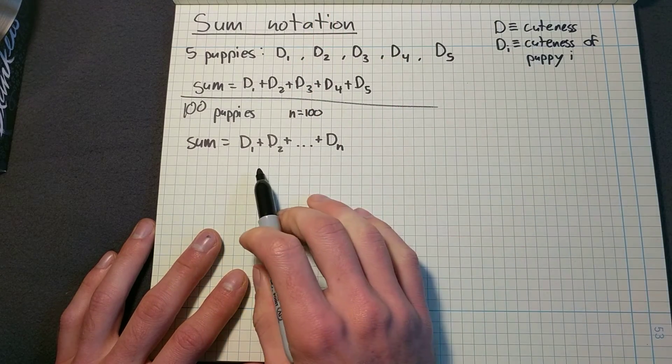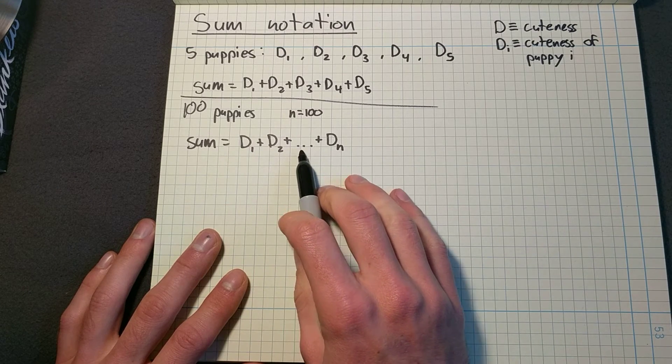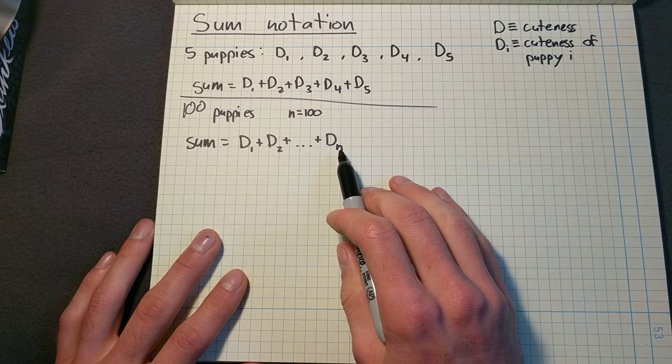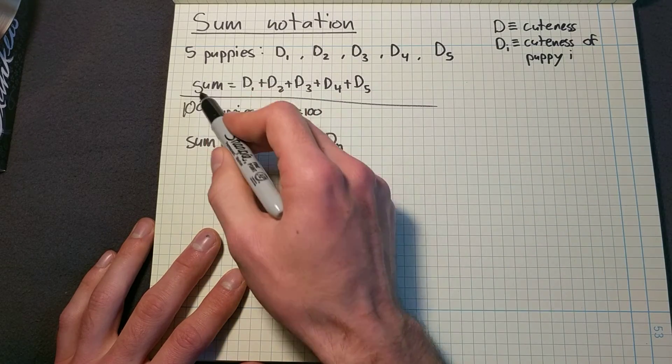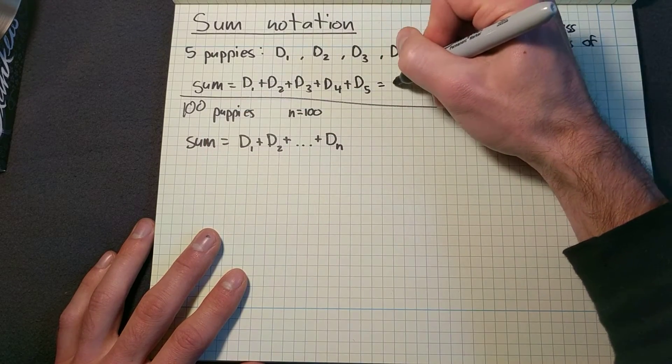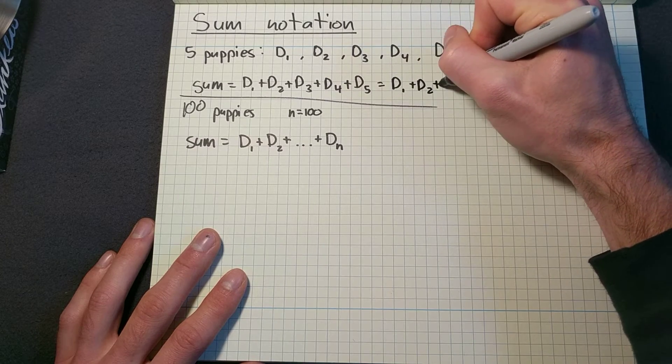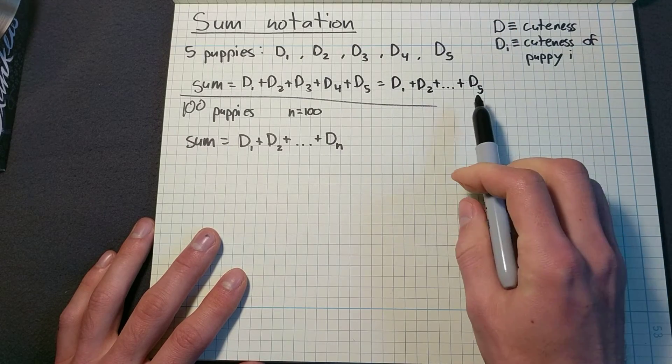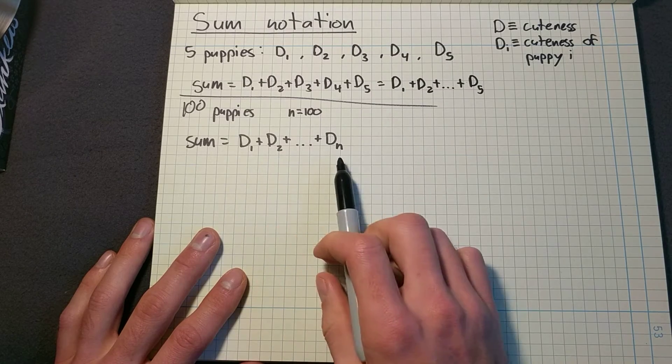So you will very frequently see this. You'll see a couple terms at the beginning, you notice the pattern right away, you'll see dots, and then we assume this goes up to D N. So I could write this for the five puppies as D one plus D two plus dot, dot, dot plus D five. Although this didn't save me that much writing because I only cut out D three and D four. But for a hundred, I definitely save a lot.